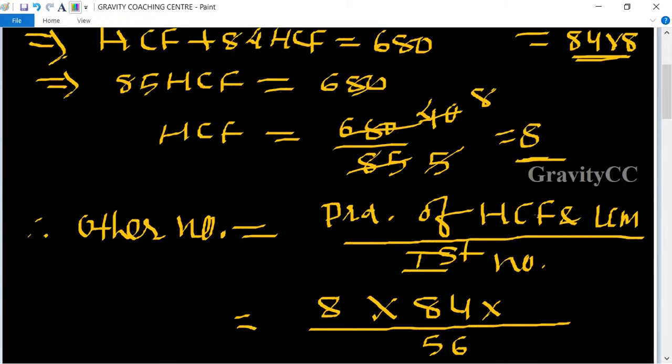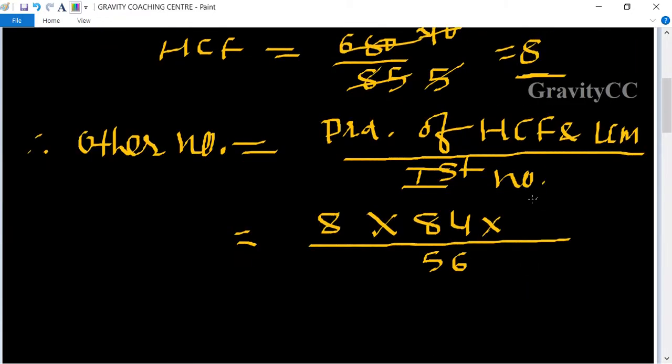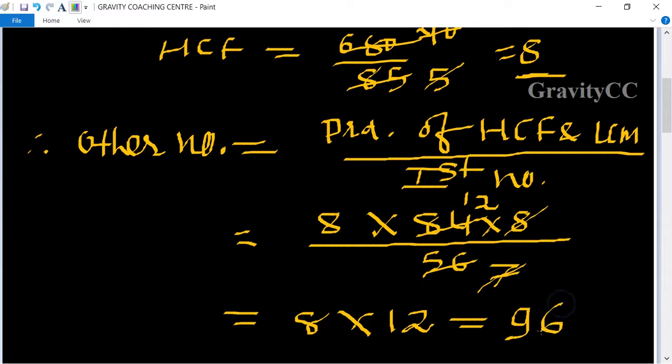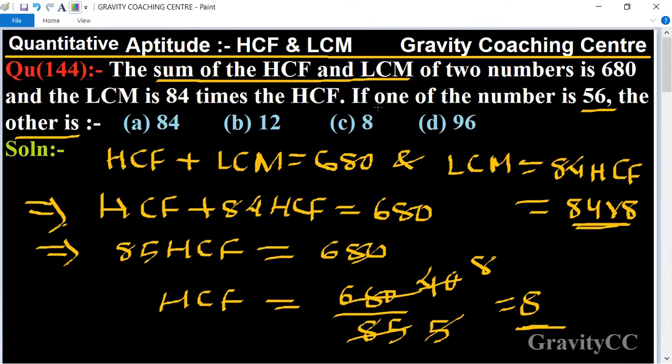Equal to 84 into 8. 8 times 7 is 56 and 7 times 12 is 84, equal to 8 into 12 equal to 96, which is the required answer. So option D is the correct answer.